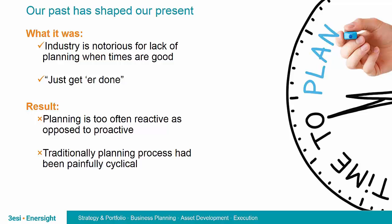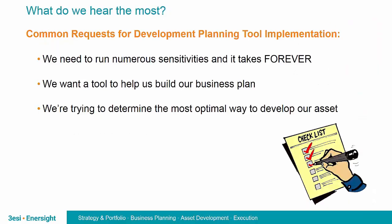In addition to these challenges, companies in the oil and gas industry are notorious for operating with a lack of planning, especially when times are good. In Canada, we call this the 'just get it done' attitude. Two things that come from this are that planning is often reactive as opposed to proactive, and the planning process tends to be painfully cyclical — an asset team is often either chasing a drilling rig or getting locked in time-consuming iterations presenting a plan to management and evaluating any changes requested.